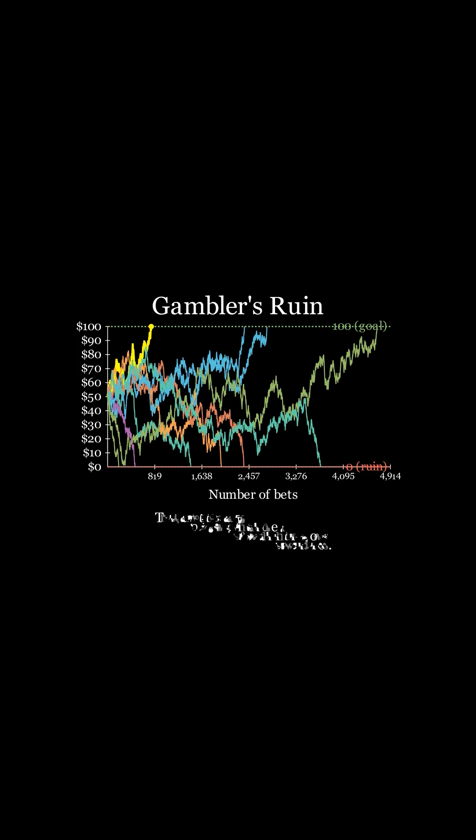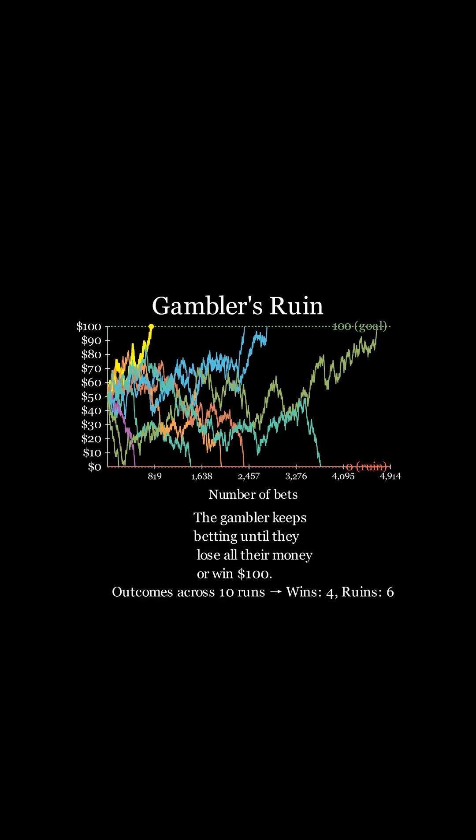The gambler will keep betting until they reach an end state where the gambler loses all their money or they win $100. The gambler's ruin is a stochastic process because it is probabilistic, meaning the outcomes are not perfectly predictable.